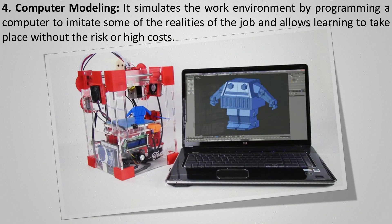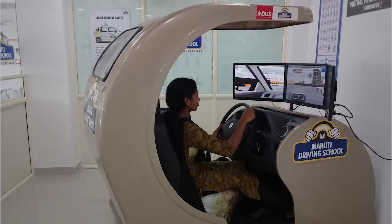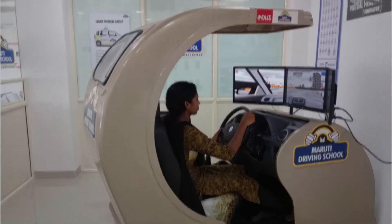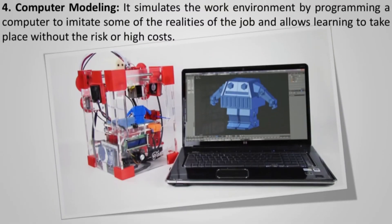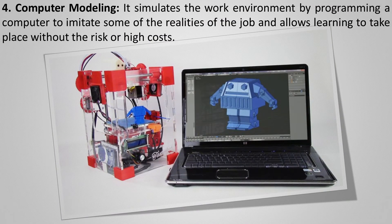The next method is computer modeling. If you've ever visited a driving school, you may have seen a virtual car — this reduces the risk of accidents. The same principle applies here. Computer modeling simulates the work environment by programming a computer to replicate reality. It helps trainees learn without the risk or high cost that would be incurred if mistakes were made in real life.